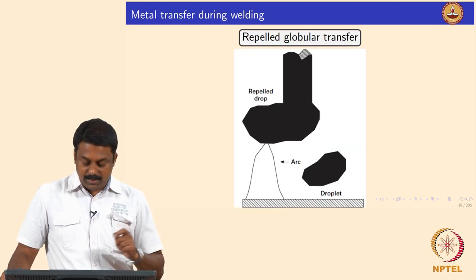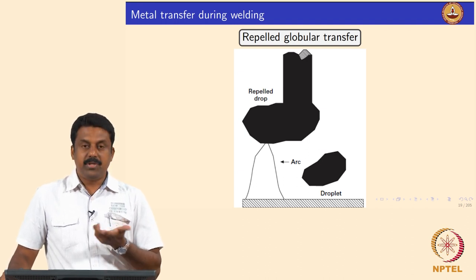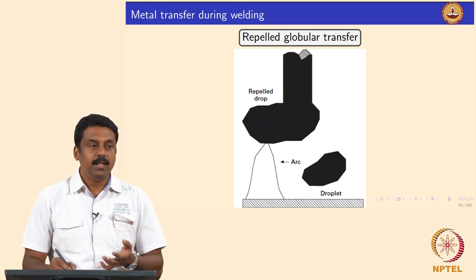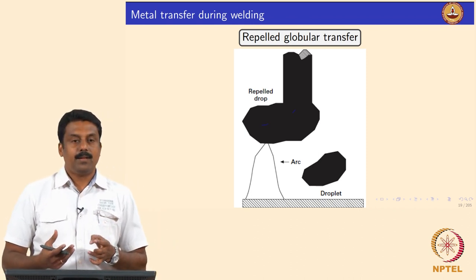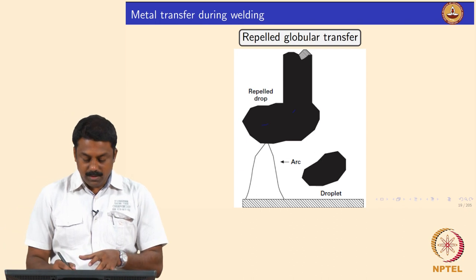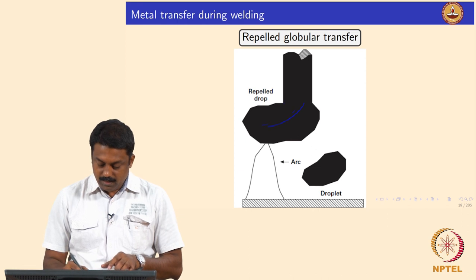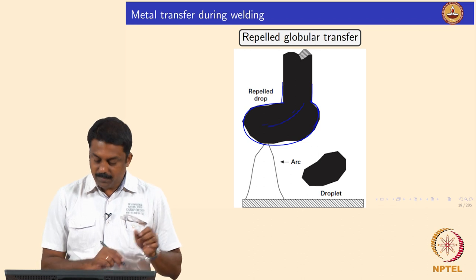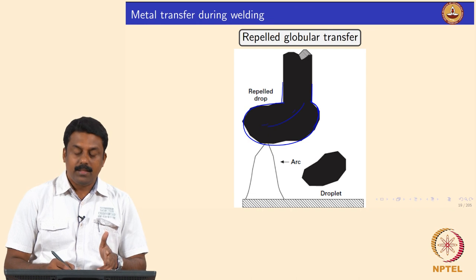If you increase the current slightly further it becomes repelled globular. The globular shape changes to repelled globular because of increasing current. Some Lorentz force is generated, which changes the magnetic field inside the droplet and changes its shape into the shape of a clown's shoe. Then the droplet, after attaining critical mass, is pulled down by gravity.